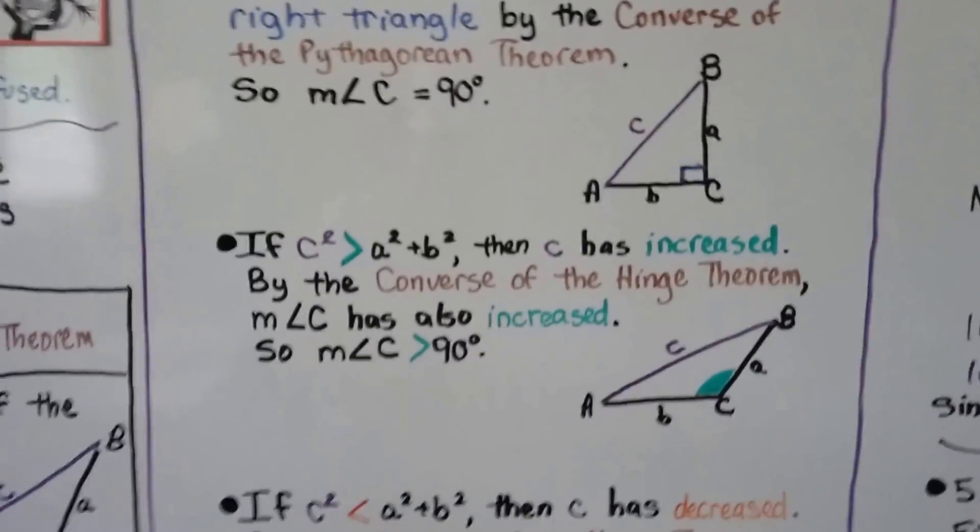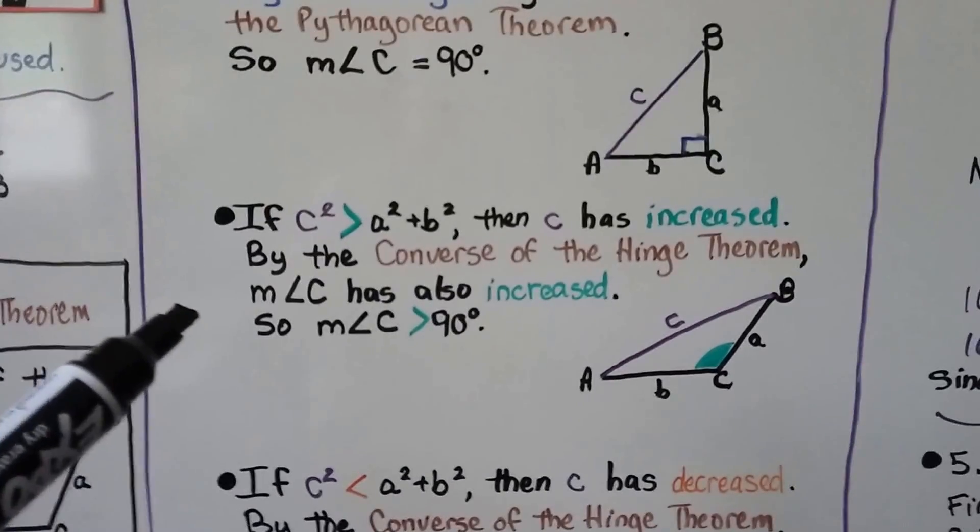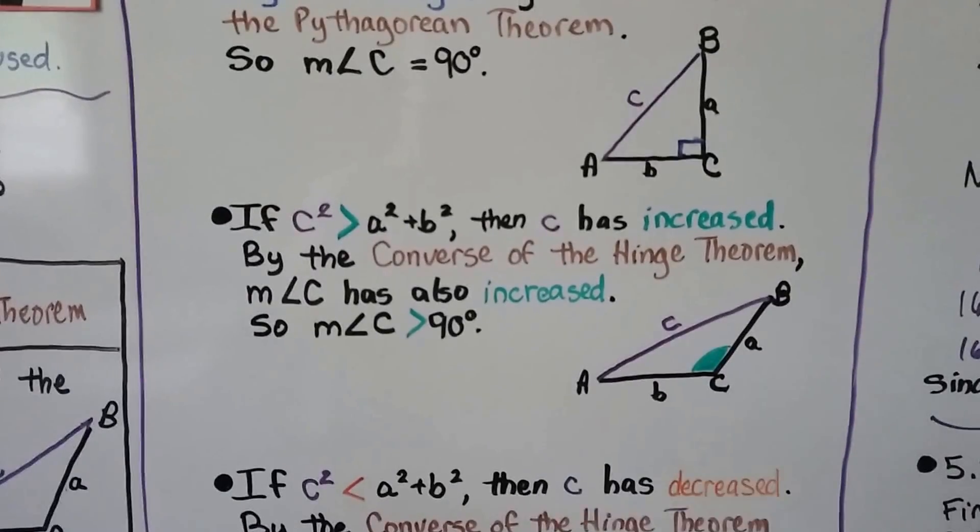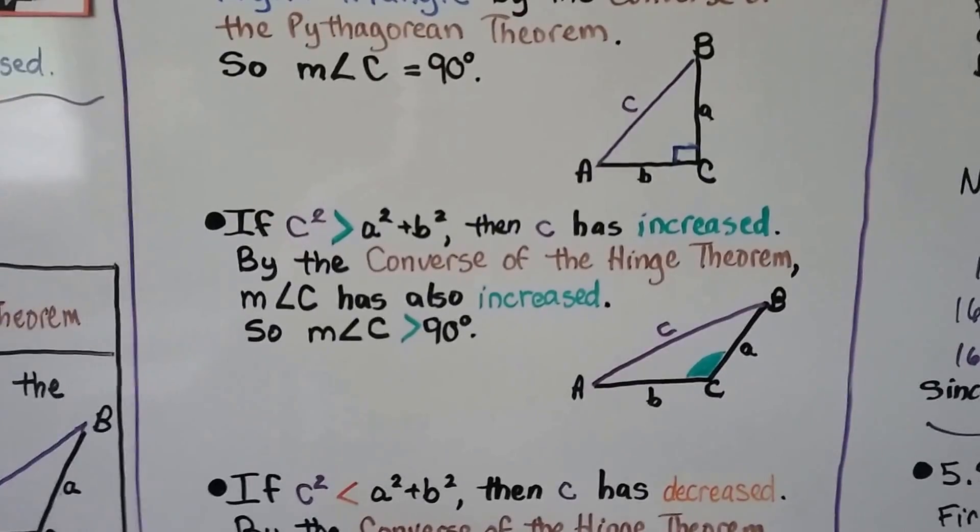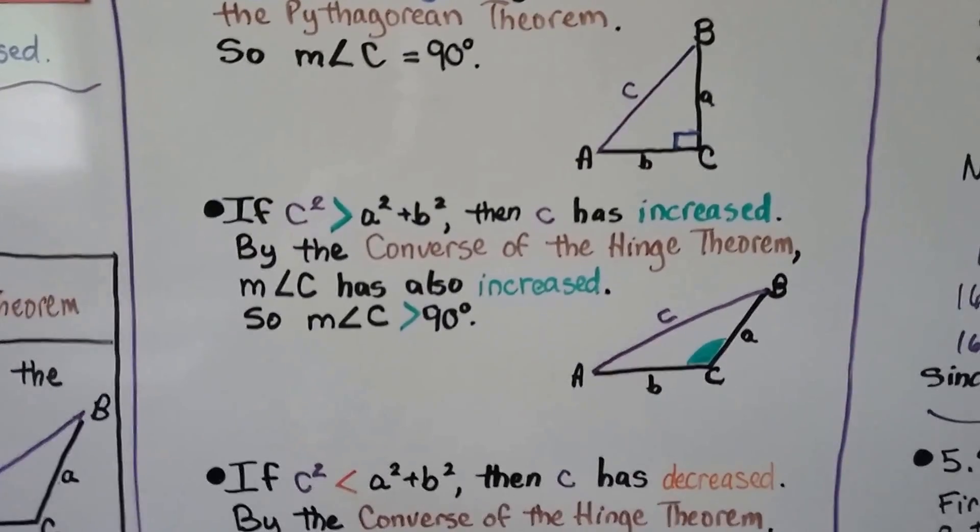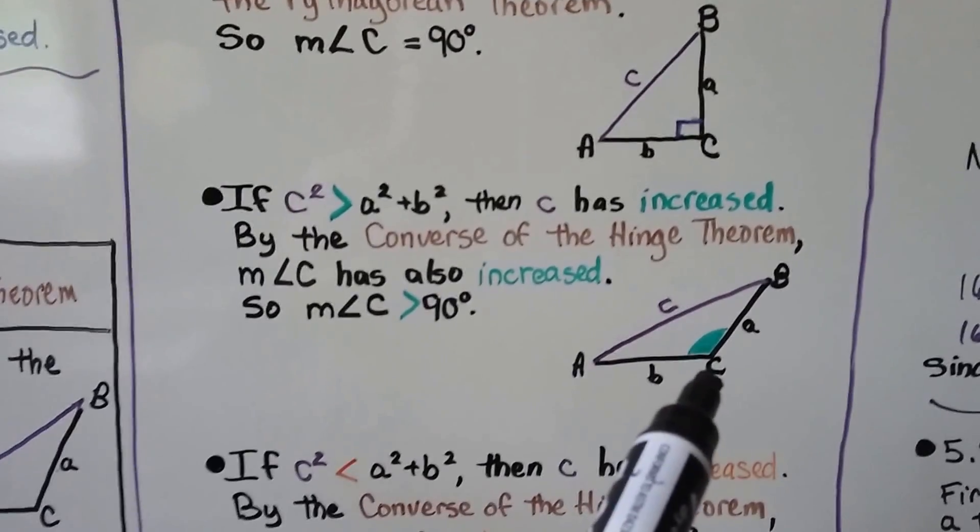And if c² > a² + b², then c has increased. By the converse of the hinge theorem, the measure of angle C has also increased, so the measure of angle C is greater than 90 degrees.